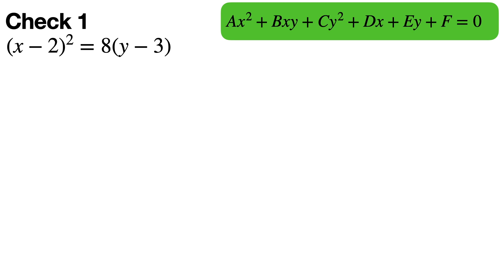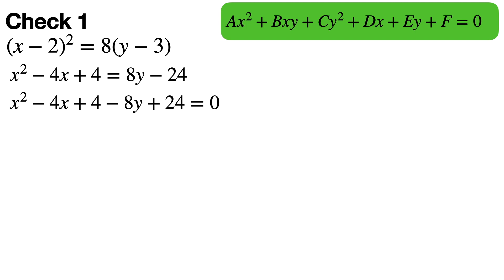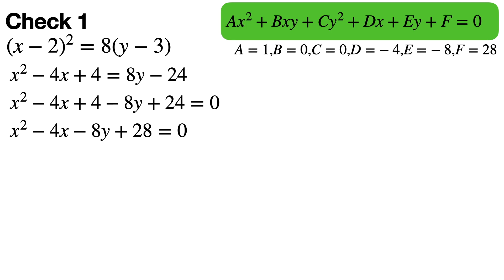To solve the first example, all you need to do is expand. If you don't know how to expand, an earlier appendix lesson covers multiplying expressions. Then get everything over to one side: subtract 8y and add 24 to both sides, simplify by combining constants, and you get x squared minus 4x minus 8y plus 28 equals zero. That is in general conic form. Here a equals 1, b equals zero — b must be zero for a vertical or horizontal parabola — and c equals zero because either the x squared or y squared term must have a zero coefficient.